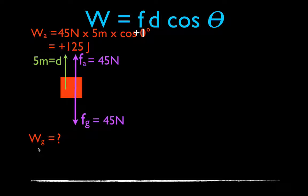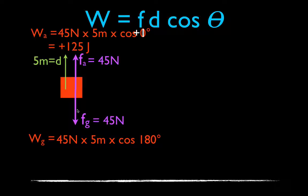Now, what about the gravitational force? The gravitational force acts opposite to the motion — the object is moving up, but gravity is a downward force. The gravitational force is 45 newtons over 5 meters. Theta is the angle between the displacement and the force: displacement points up, force points down, so the angle is 180 degrees. The cosine of 180 degrees is minus 1. That means it's 45 times 5 times minus 1, which is minus 225 joules. When you raise an object up, you do positive work and gravity does negative work.